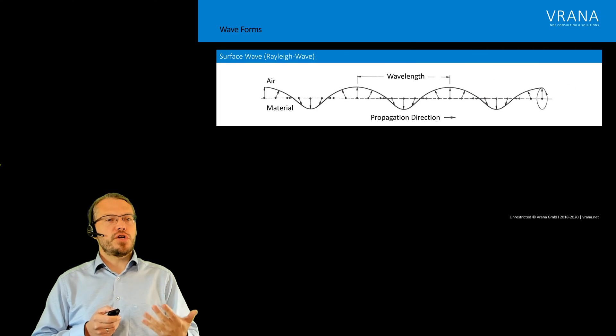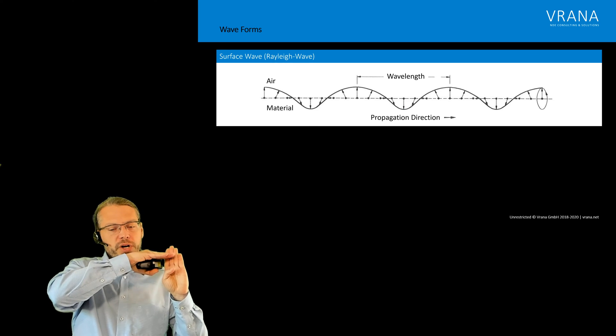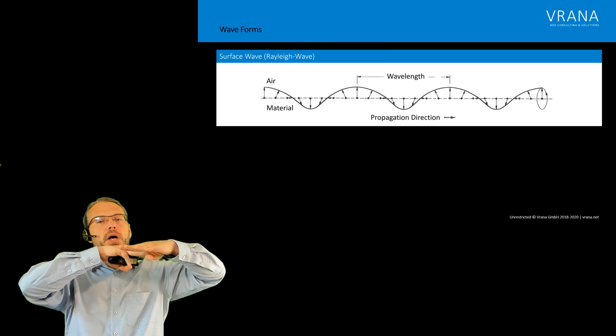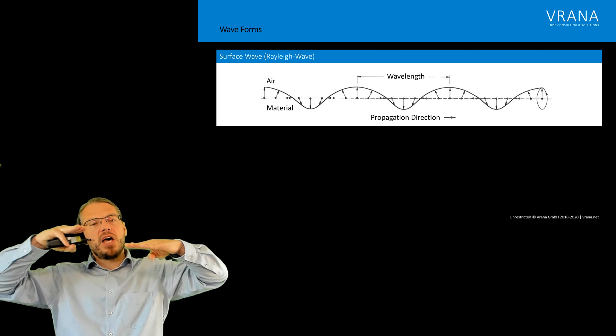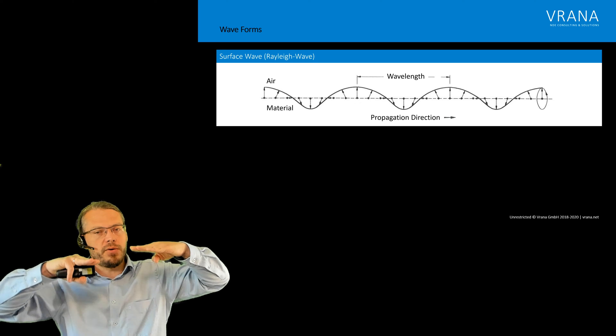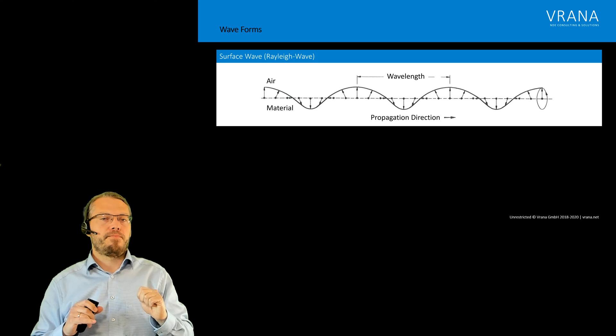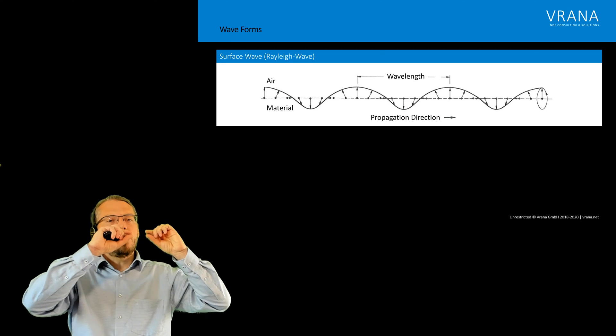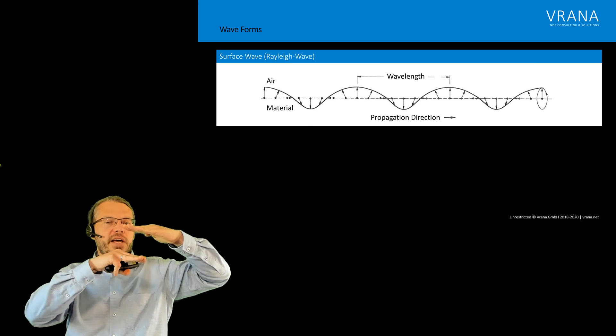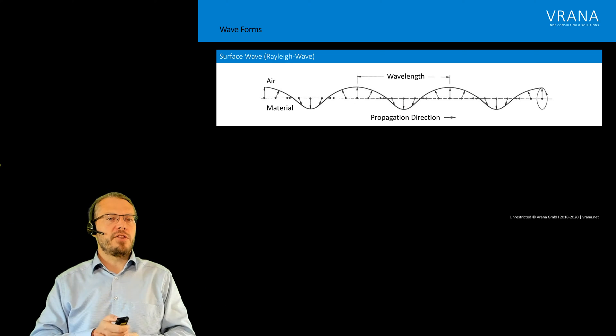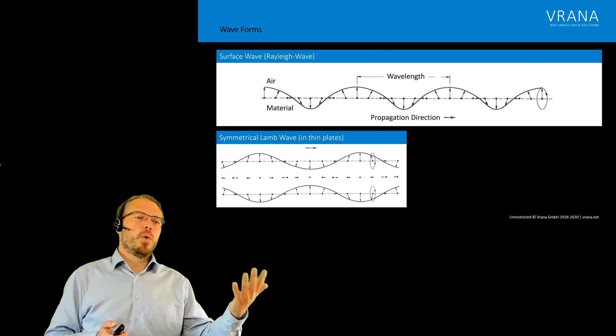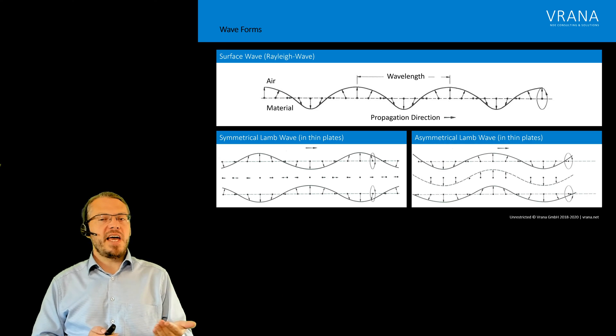One is a so-called surface wave or also Rayleigh wave. Rayleigh wave travels right on the surface of a component. So if we have air here and material down here, that wave is really traveling on the surface and then we have an exponential decay from the surface down into the material. Now if we think about this surface wave traveling in a very thin component, so we have air, material, and air very close together, then we are getting something called a Lamb wave. The Lamb wave is actually we see two modes: one is the symmetrical Lamb wave and one is an asymmetrical Lamb wave.